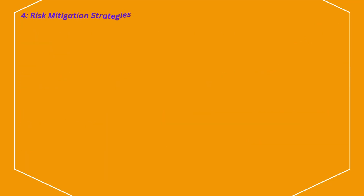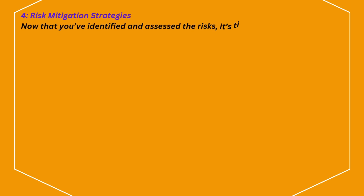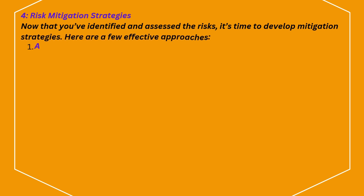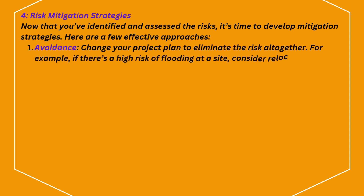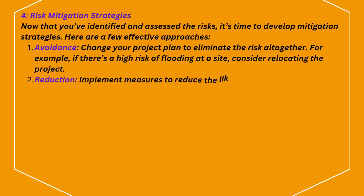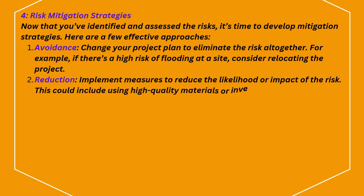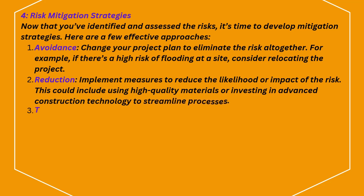Risk mitigation strategies. Now that you've identified and assessed the risks, it's time to develop mitigation strategies. First, avoidance: change your project plan to eliminate the risk altogether. For example, if there's a high risk of flooding at a site, consider relocating the project. Second, reduction: implement measures to reduce the likelihood or impact of the risk. This could include using high-quality materials or investing in advanced construction technology to streamline processes.